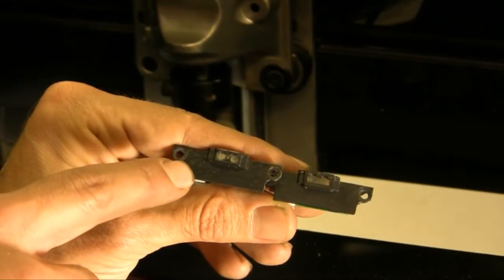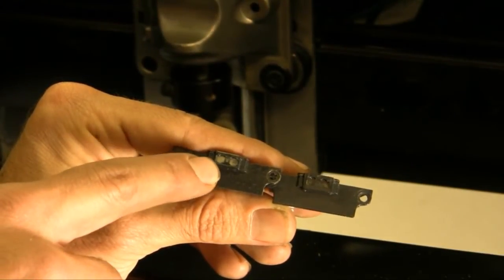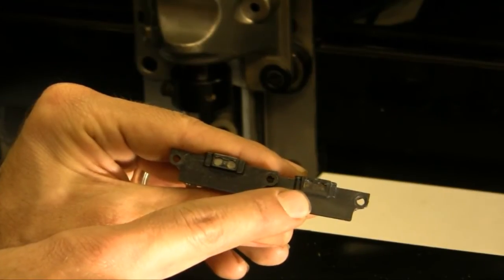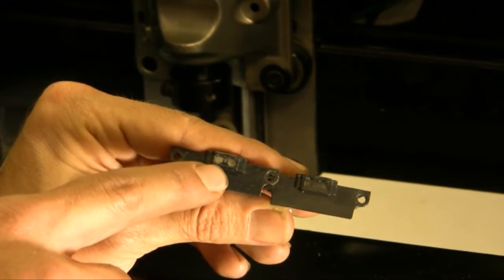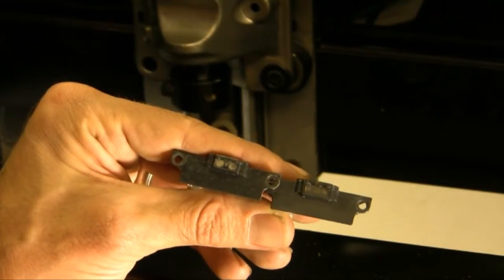So you can see the difference between a dirty one here with dust that's behind the lens and a clean one here. So if you can't blow out the dust from behind the lens, we'll have to replace the sensor.